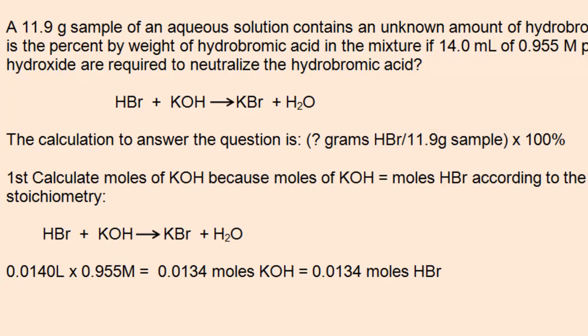Like in many titration problems, the first step is to calculate the moles of titrant used. In this case, the moles of KOH. Multiply the molarity of the KOH, 0.955 M, by the volume of KOH used, 0.0140 L, which equals 0.0134 moles.